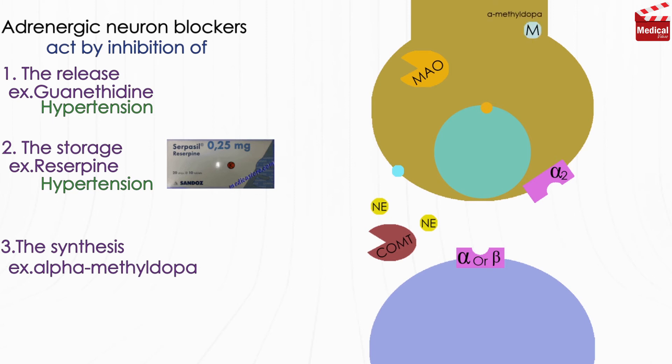Alpha-methyldopa acts by inhibition of dopa decarboxylase enzyme, which converts dopa into dopamine. And as we know, dopamine is a precursor for norepinephrine and subsequently epinephrine. This inhibition results in reduced dopaminergic and adrenergic neurotransmission in the peripheral nervous system. It is converted to alpha-methyl norepinephrine by dopamine beta-hydroxylase.